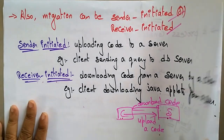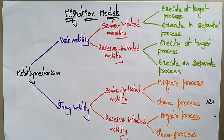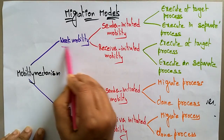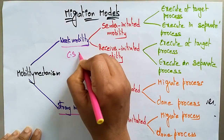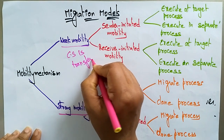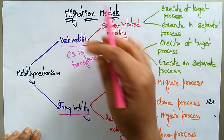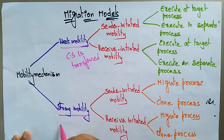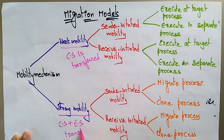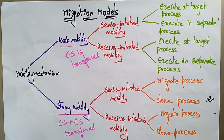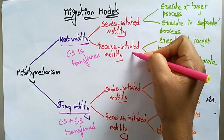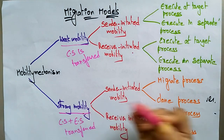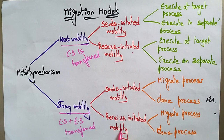So these are all the different migration models. The migration mechanism consists of weak mobility and strong mobility. Weak mobility means only the code segment is transferred, while strong mobility means both the code segment and the execution segment are transferred. Weak mobility can be sender-initiated as well as receiver-initiated, and similarly strong mobility can be sender-initiated or receiver-initiated.